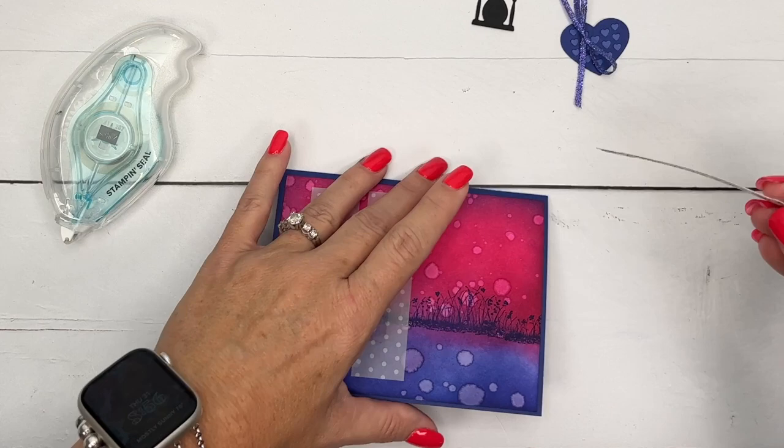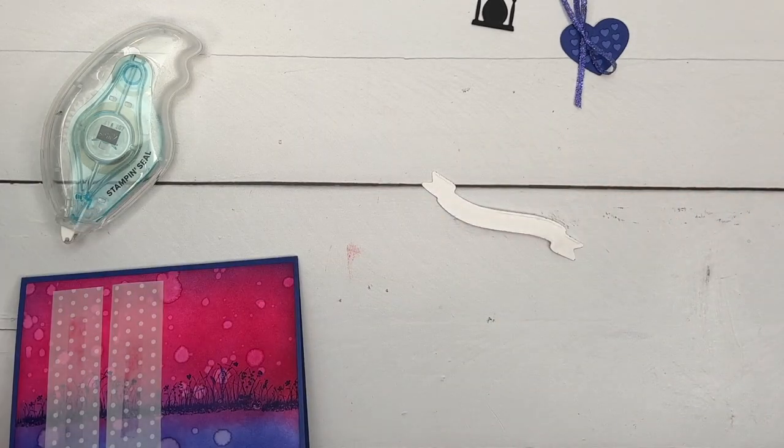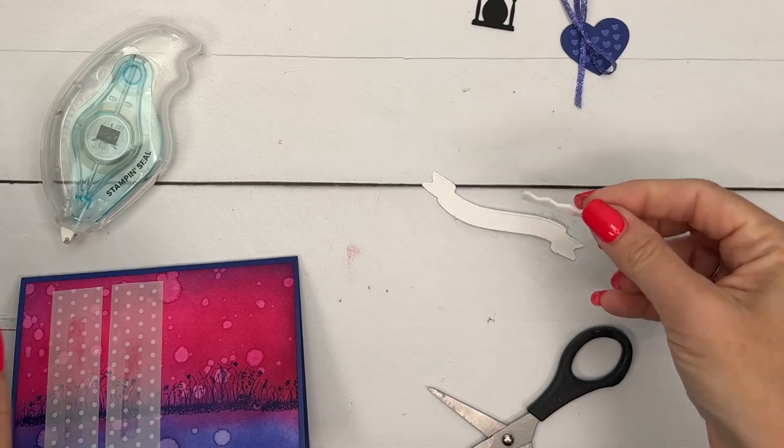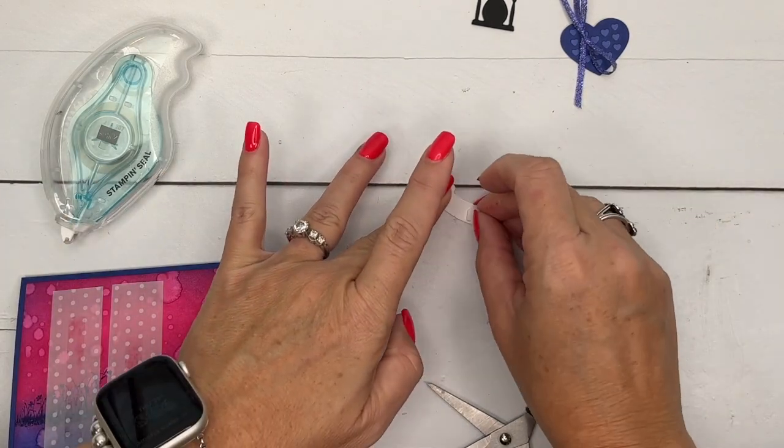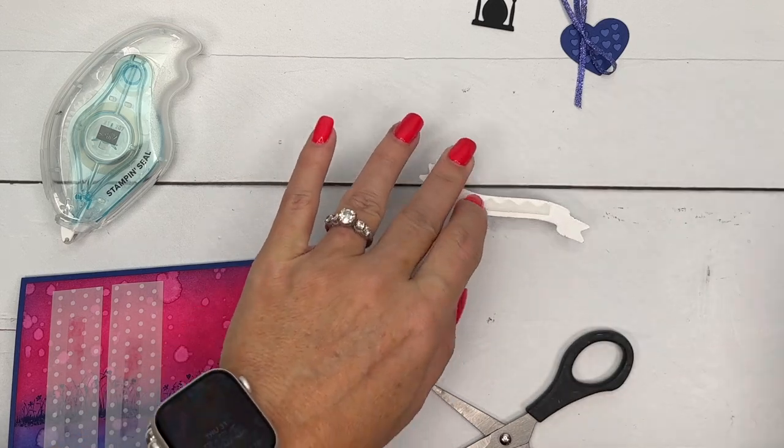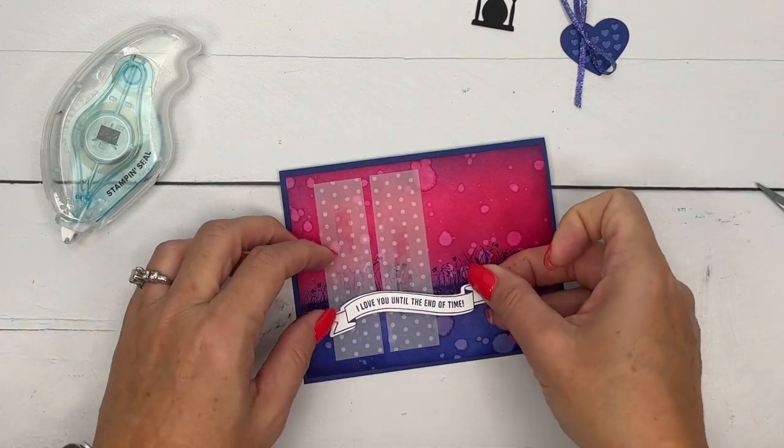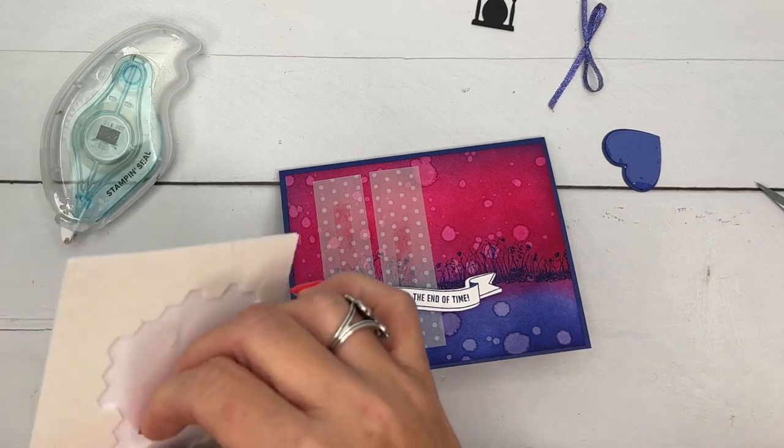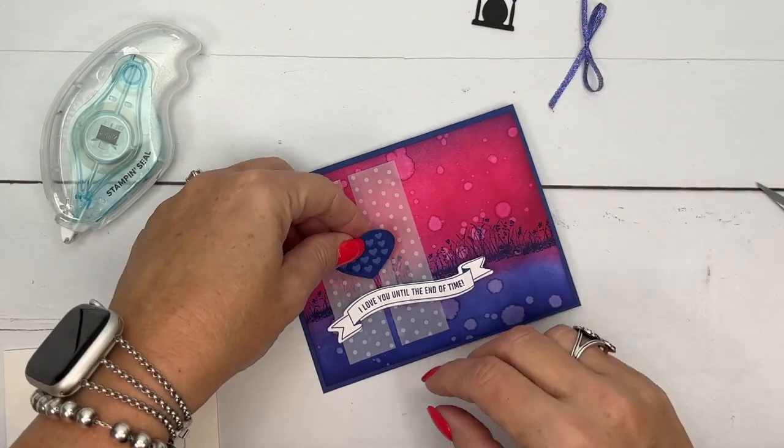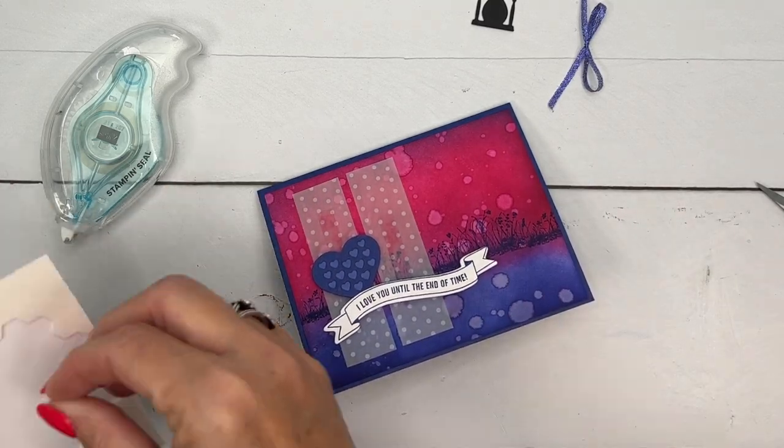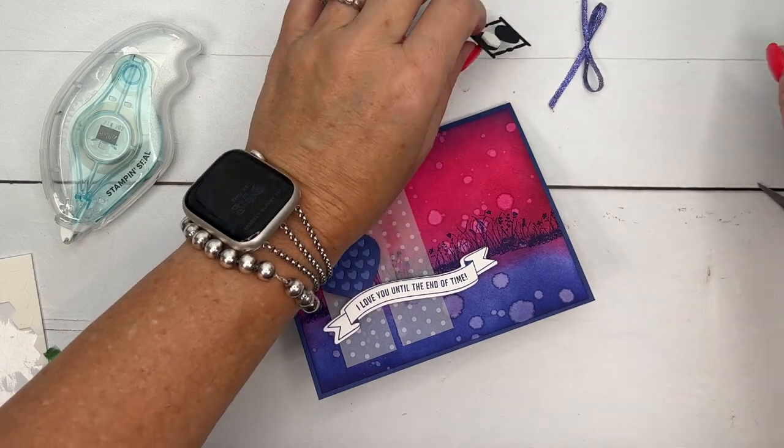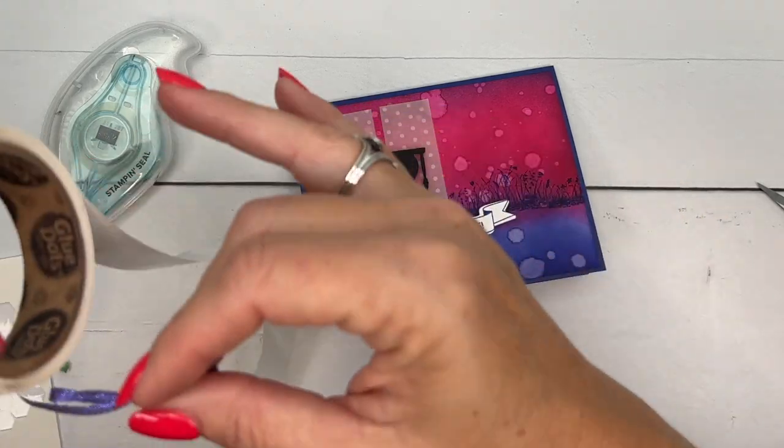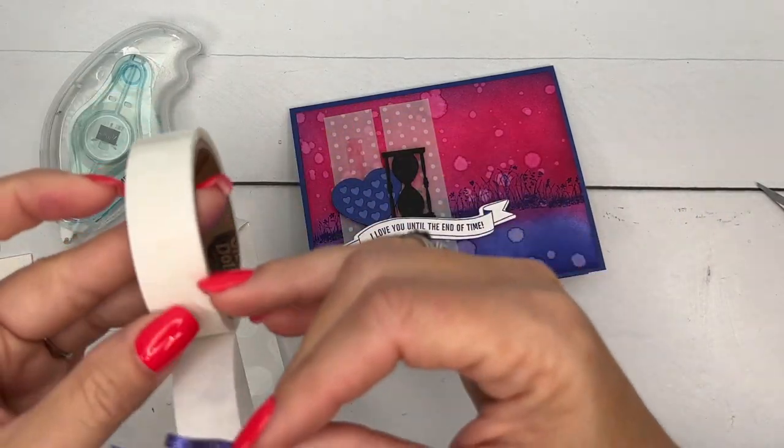And now we'll just layer everything on. I'm going to start with my sentiment and we'll build up from there. I'm going to use the edges of my big dimensionals. Don't throw your dimensional sheets away, guys. Use those edge pieces. Or you can use mini dimensionals here too. All right. I'm going to put that right there and then we'll take these guys and we'll use our regular dimensionals. Got one here like that and we'll do this one like that. And then we got a glue dot for our bow and we are done.